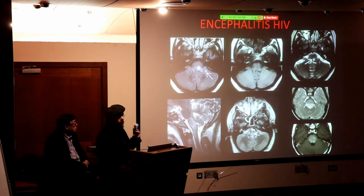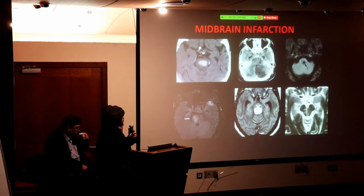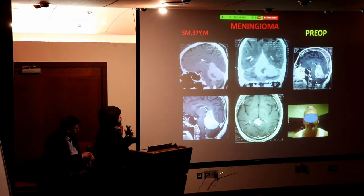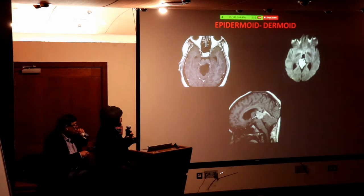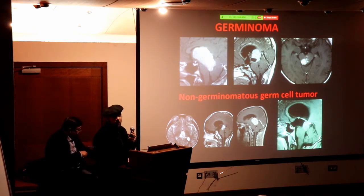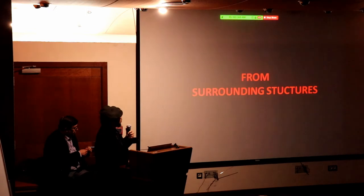HIV-related brain stem pathology is underreported here. Meningiomas can occur in the brain stem. Germinoma is critically important: if you miss the diagnosis, labeling it a non-biopsible brain stem lesion and treating with radiotherapy alone, you are missing a potentially curable malignancy. Germ cell tumors in the brain stem are cured with platinum-based regimens followed by consolidation radiotherapy.